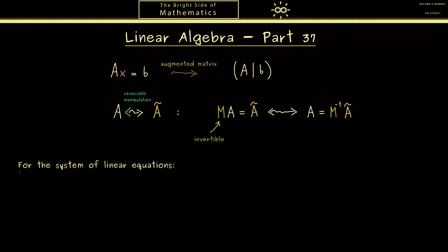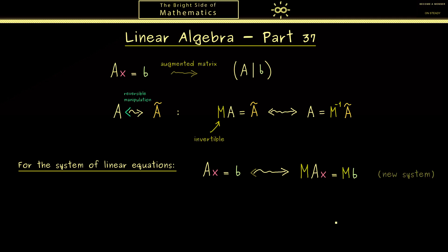We can also state this for the system of linear equations. We multiply the equation Ax equals b by M from the left hand side. The new system now reads M times Ax is equal to M times b. The idea is that this new system is simpler in the sense that it is easier to see the solution set. Please remember this overall idea, which we already saw in the last video.